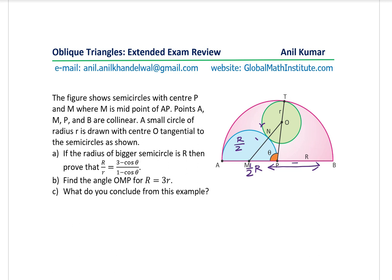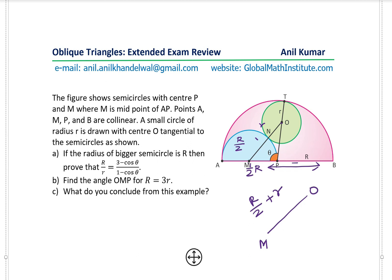The distance MO — the side of the triangle of interest between M and center O — is R/2 plus r. Now let's take the other points. We will be solving this triangle. M to P is R/2, and the distance O to P is R minus r, since the total is R.